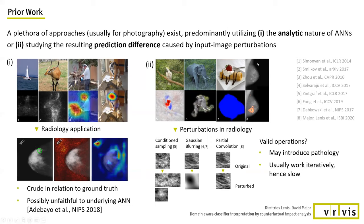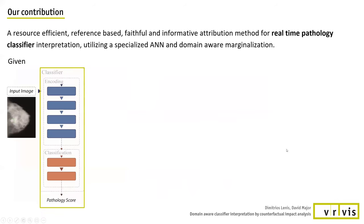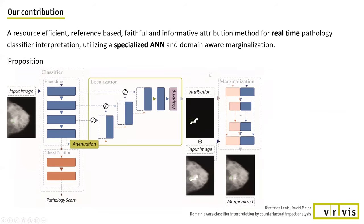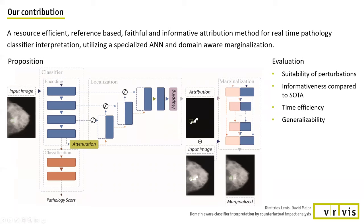As shown on the bottom right, the result should not be considered anatomically sound and healthy. We also depict one of the few approaches directly developed for medical images: the locally acting but globally conditioned partial convolution inpainting, which overcomes out-of-distribution issues. However, it cannot be used in time-sensitive detection environments. To solve these issues, we introduce a resource-efficient, reference-based, faithful, and informative attribution method that exploits domain-aware marginalization with partial convolutions and presents a specialized network capable of deriving the desired attribution map in a single forward pass. We show suitability for radiology, compare with popular state-of-the-art work, and demonstrate time efficiency and generalizability.